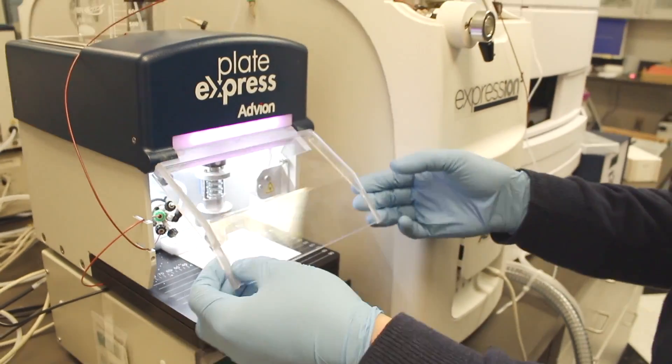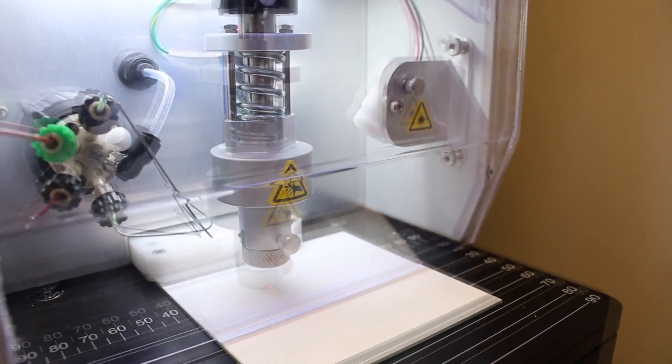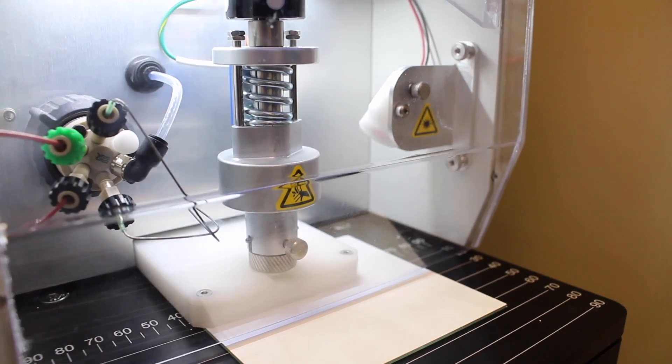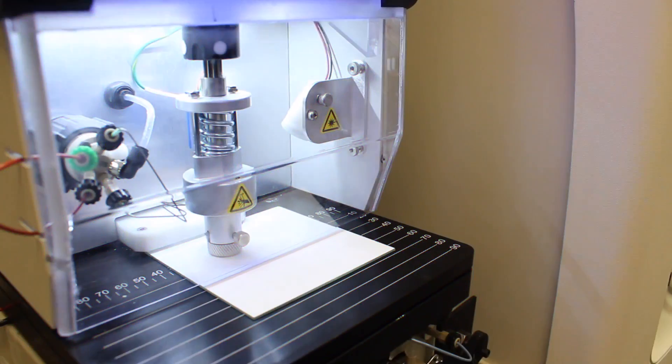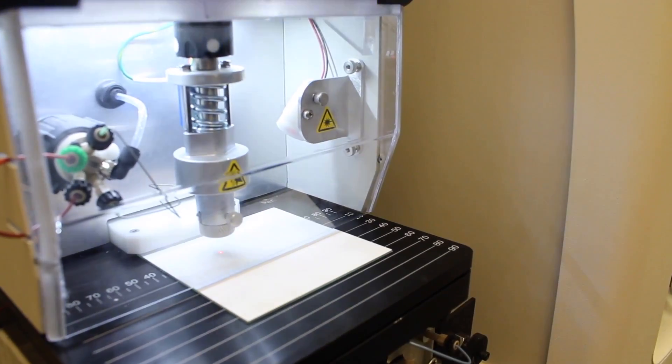This avoids system bottlenecks. Unlike LCMS, where the mass spec is occupied for the entire duration of the chromatography, TLC-MS is much faster because the separation's already been done. Chemists find this is the number one way to optimize efficiencies in the lab.